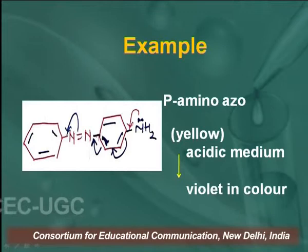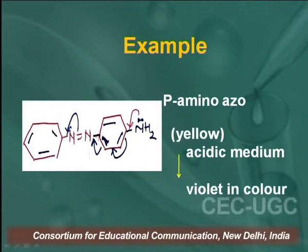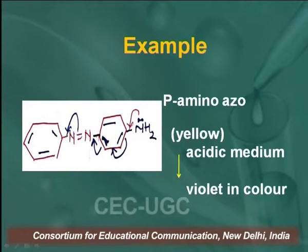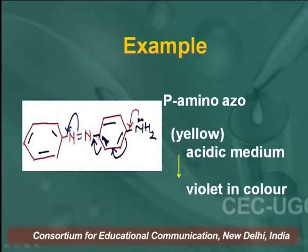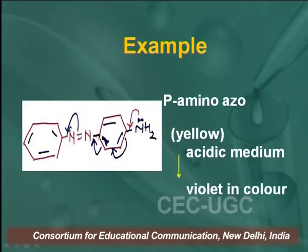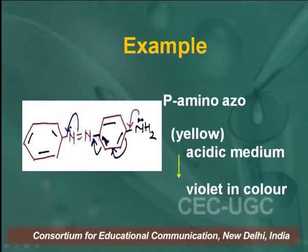In this important example — para amino azo benzene — the azo group is the chromophore. The amino group is the oxochrome; it has non-bonding electrons that contribute to resonating structures. In neutral form, para amino azo benzene is yellow in colour, but in acidic medium it shows violet colour.